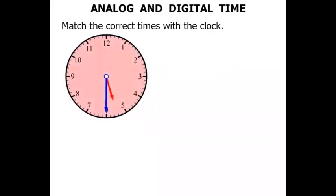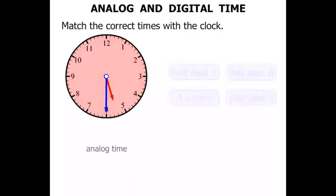Our next clock. This time the big hand is pointing straight down, so hopefully you are thinking it's probably half past something. So in terms of analog time, which one would it be? Well look at the clock. The shorter hand has just gone past the five, so it's half past five.